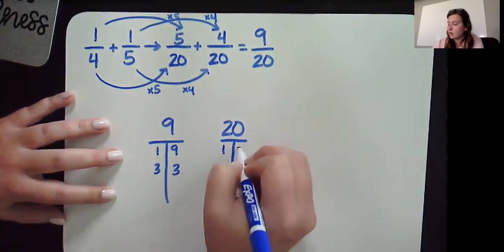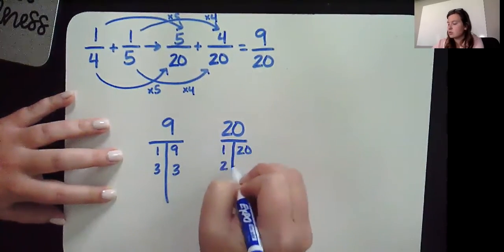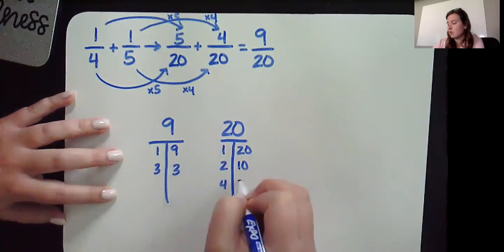To make 20, we can do 1 times 20, 2 times 10, and 4 times 5.